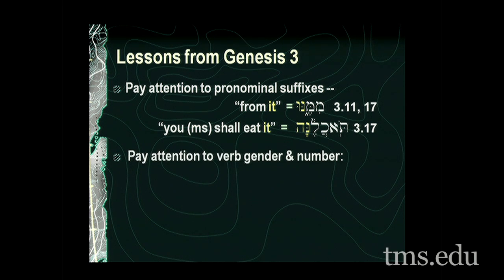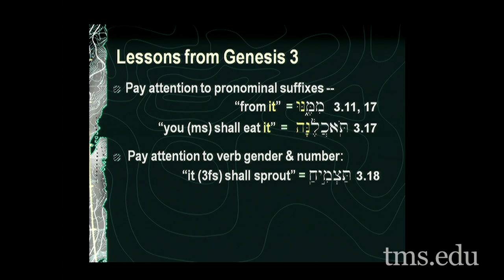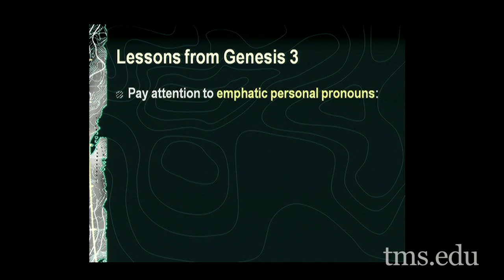Pay attention to verb gender and number. 'Tatsmiyach' — 'it shall sprout' — is a hiphil imperfect third feminine singular. The antecedent is the ground or the earth, and so you must translate it that way. It's not that the thorn and thistle sprout; it's that the ground causes the thorn and thistle to sprout.